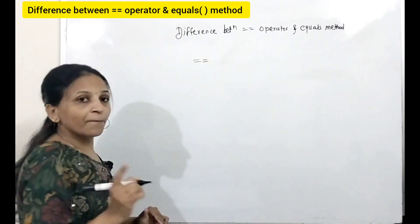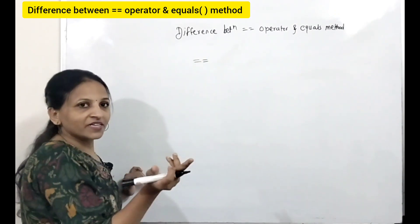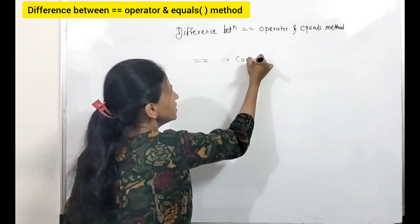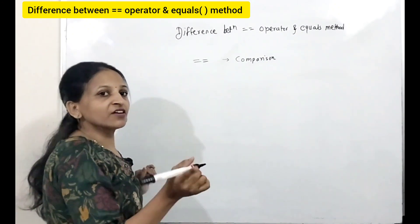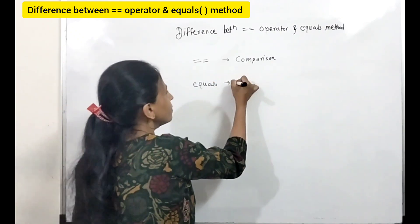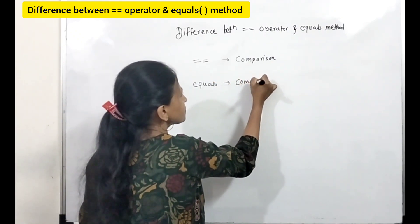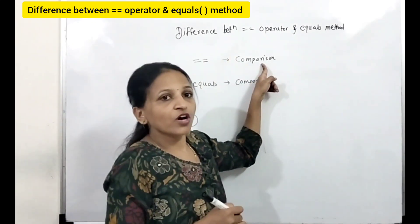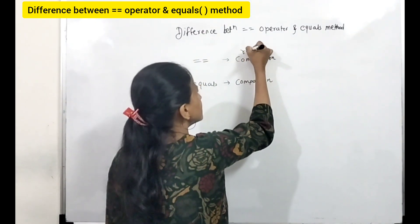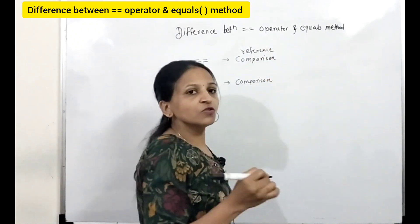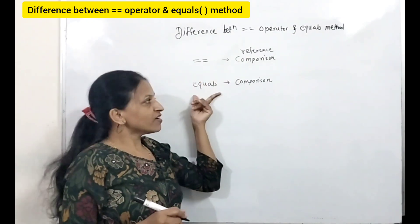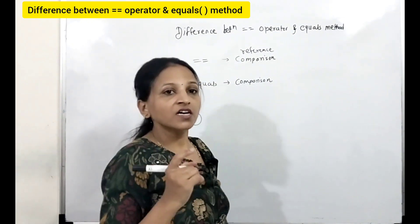This equal-to operator — called the double equal-to operator or equal-equal operator — is for comparison. Here we are going to check for equality, but this equality operator is specifically for reference comparison. Whenever we want to compare references or addresses, we use this equal-to operator. And the equals method we can use for content comparison.